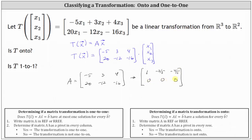Now we identify the pivots. For the matrix in reduced row echelon form, there is only one pivot — in row one, column one. Because we do not have a pivot in every column, the transformation is not one-to-one. And because we also don't have a pivot in every row, the transformation is also not onto.